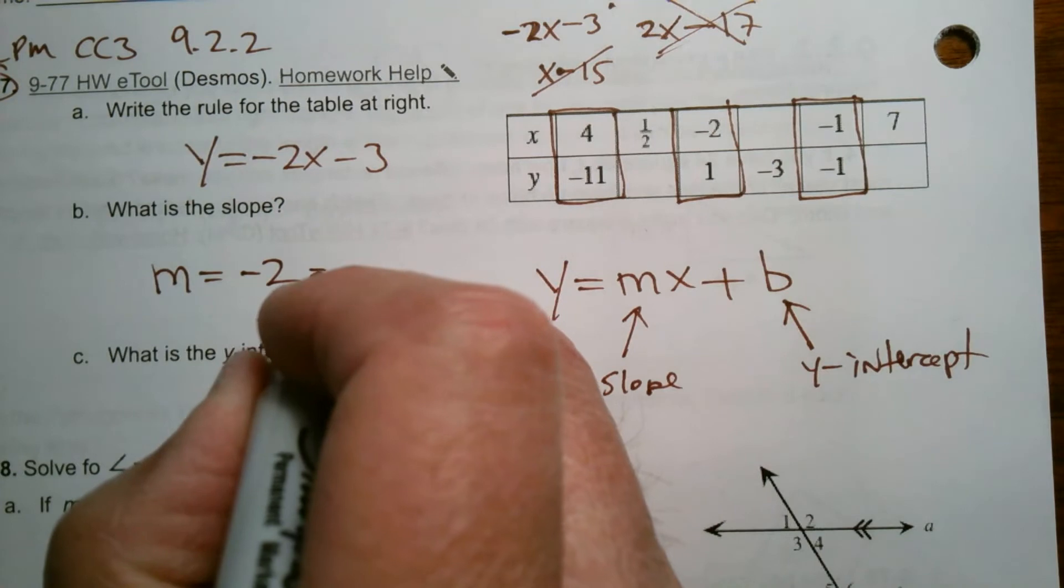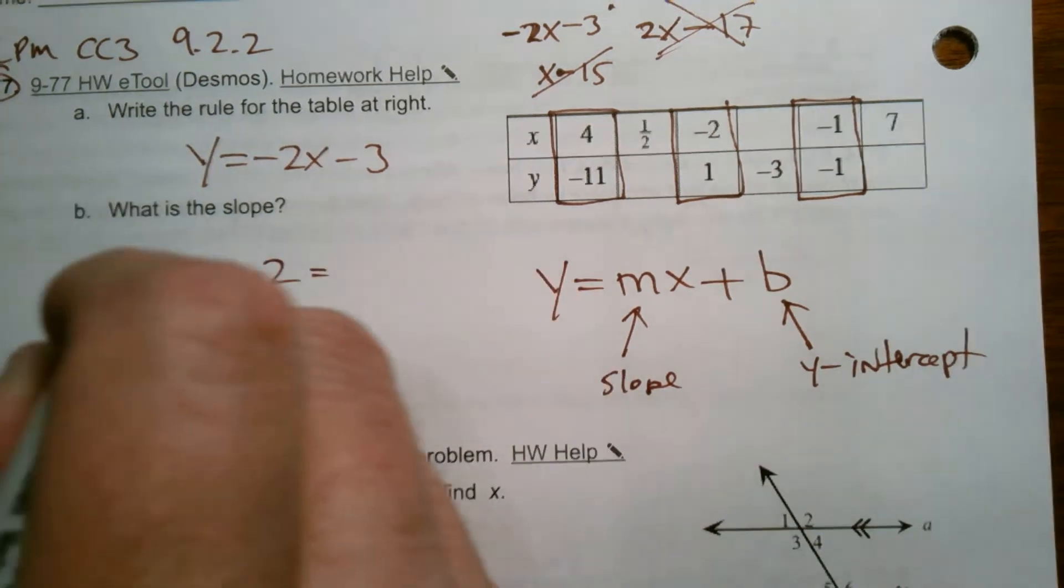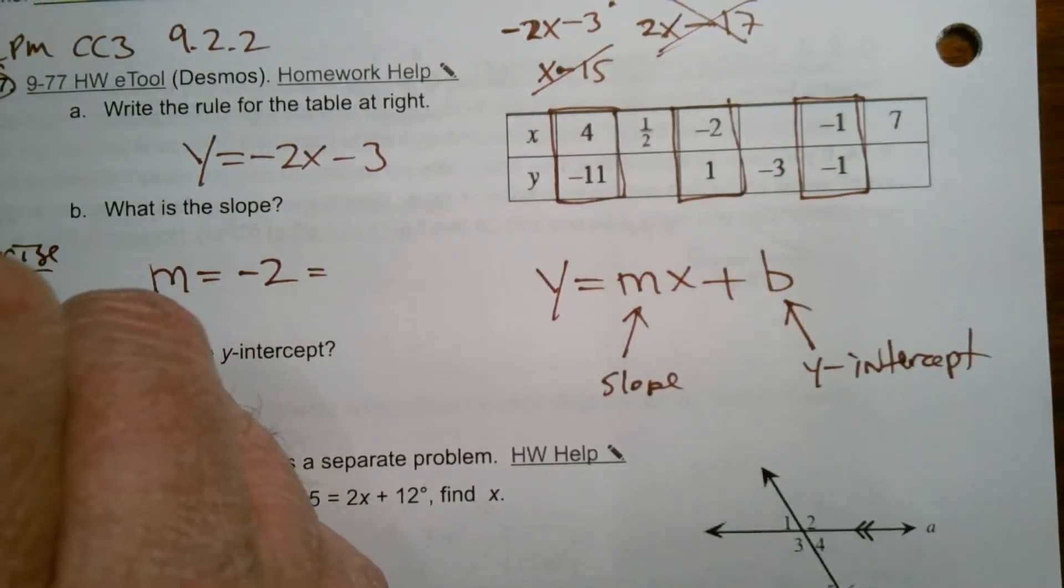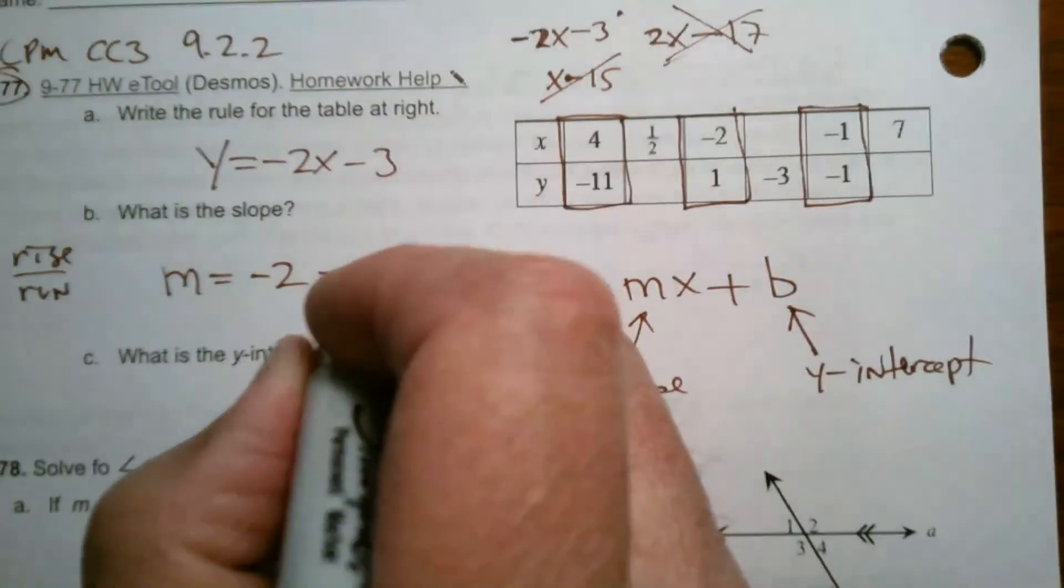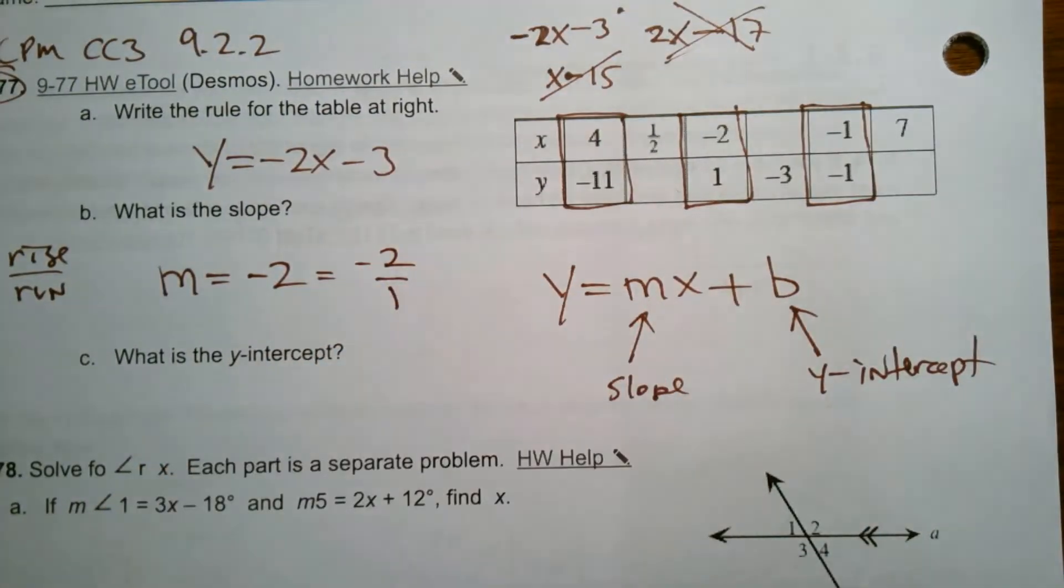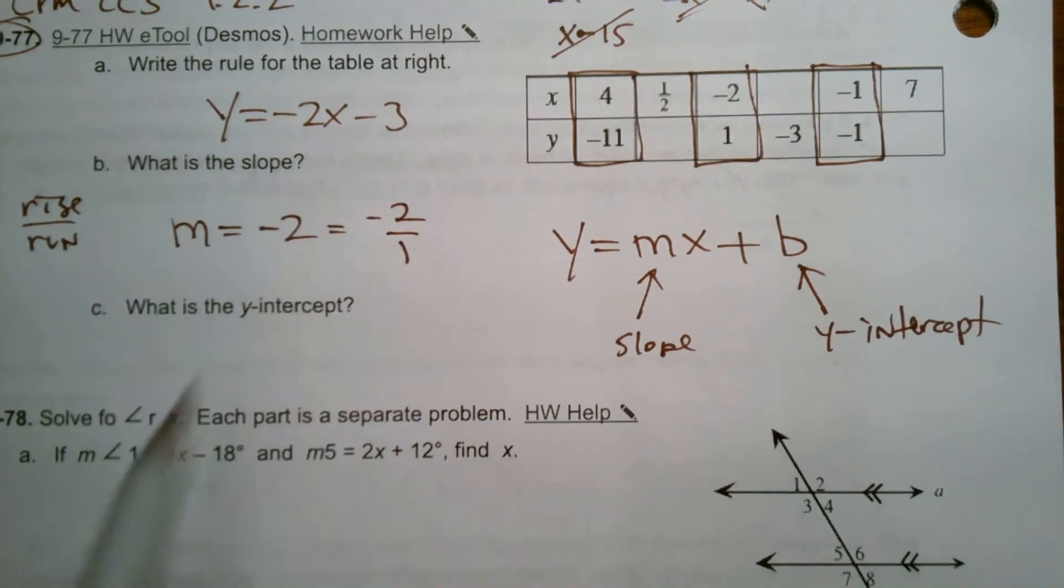A lot of times you think of slope as rise over run. Sometimes we would talk about slope as a fraction when we're graphing it. So you could also write it as a fraction, negative 2 over 1, either way. But your slope is that negative 2.